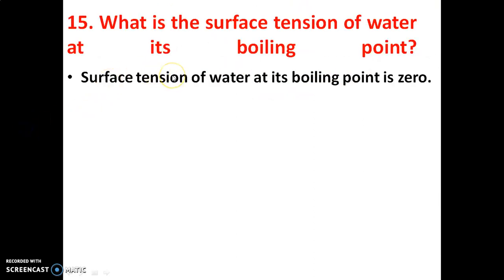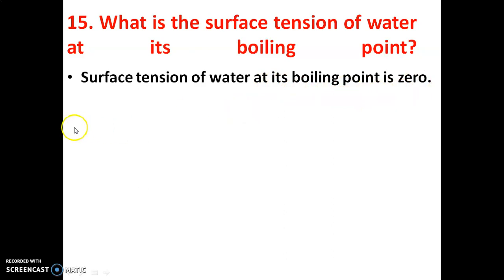What is the surface tension of water at its boiling point? The surface tension of water at its boiling point is approximately zero.